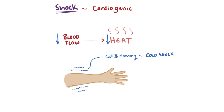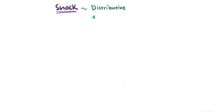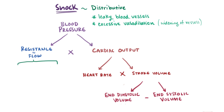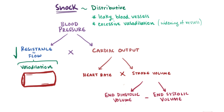The third main category is distributive shock, where there's typically a leakiness of blood vessels and an excessive amount of arterial vasodilation — widening of the peripheral blood vessels — which is one component of vascular resistance. If arterioles dilate, vascular resistance goes down, blood pressure goes down, leading to less perfusion and distribution of blood to organs and tissues.